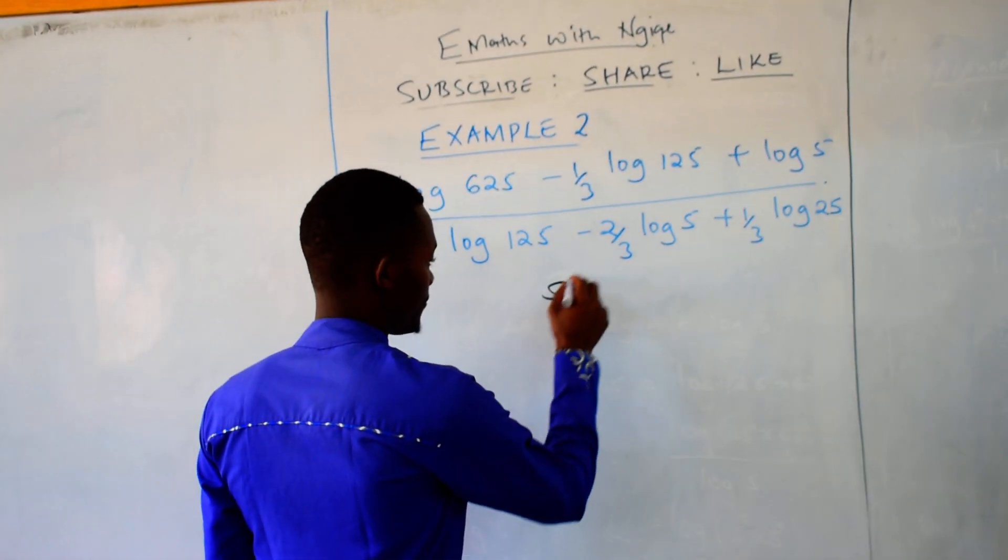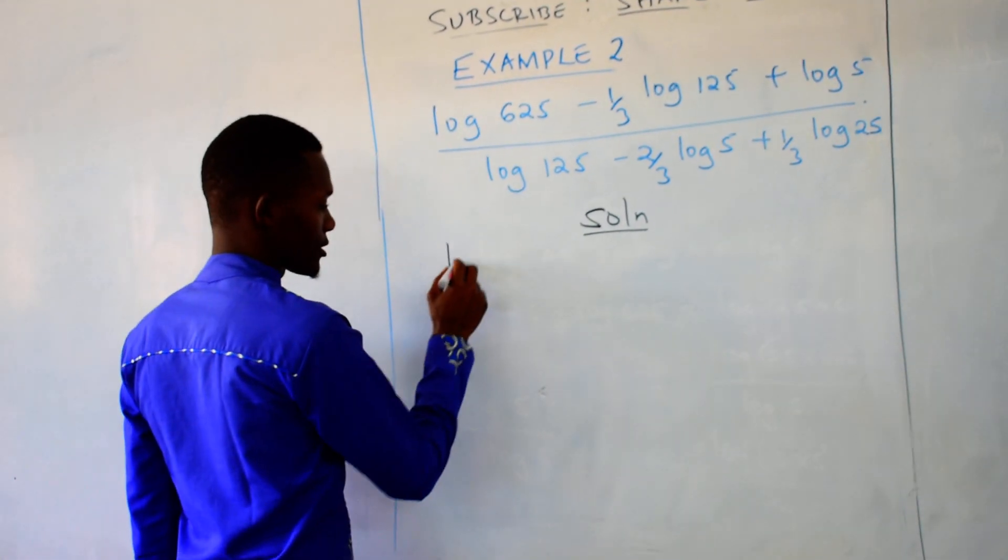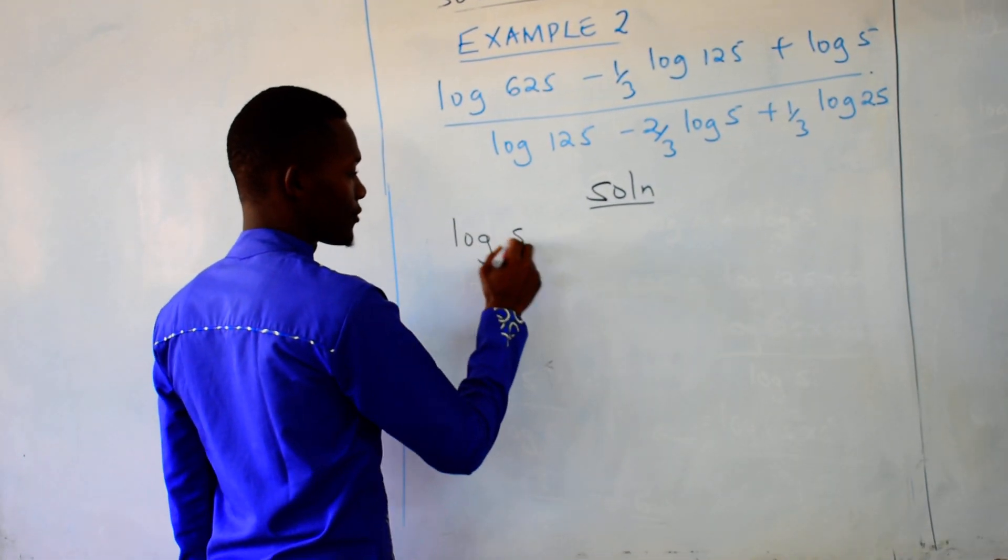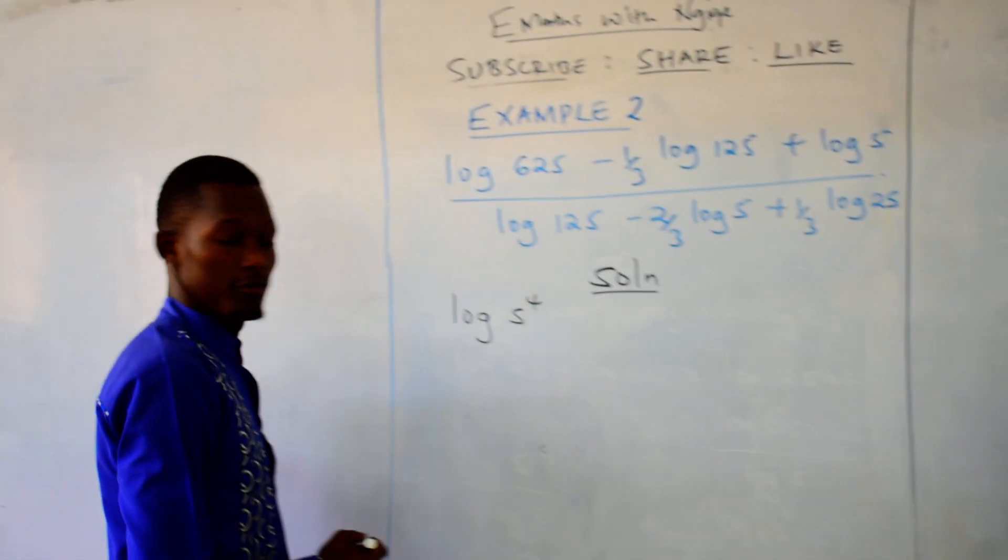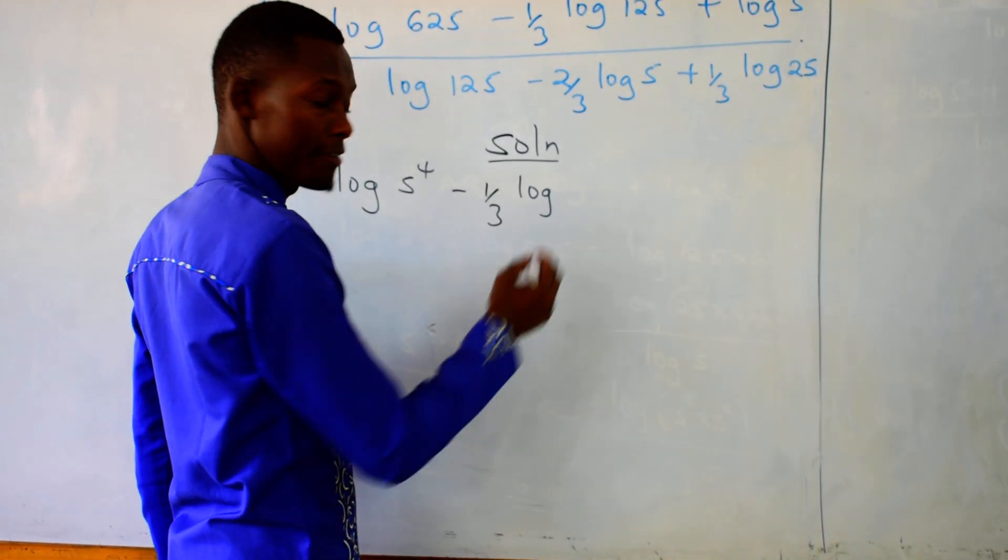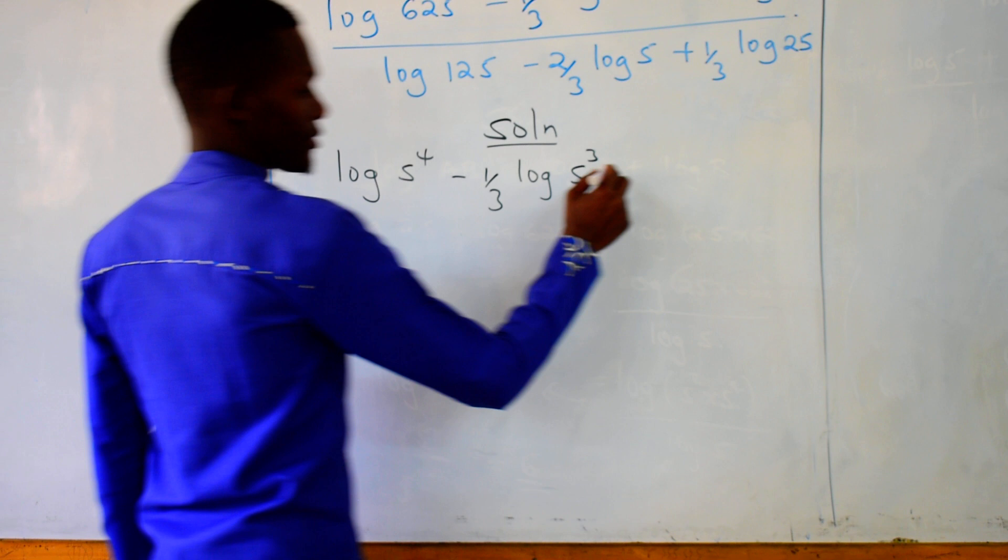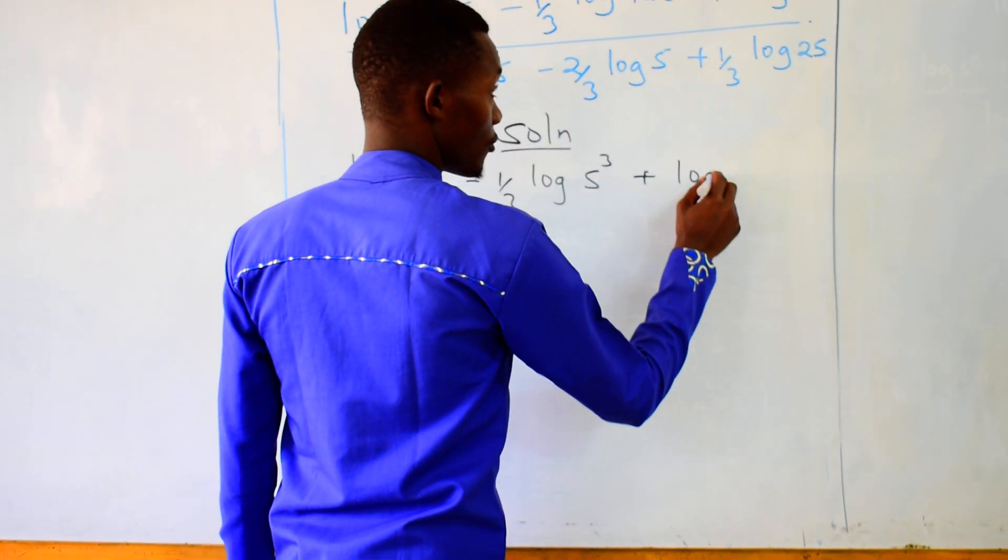Solution. So we are writing this the same as log of 5 raised to power 4 minus one over three log of 125, which is the same as 5 to power 3, then plus log of 5.